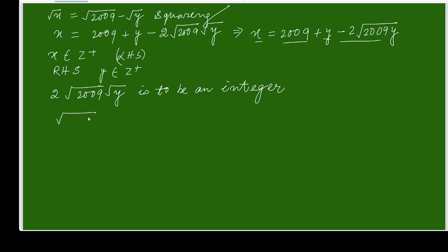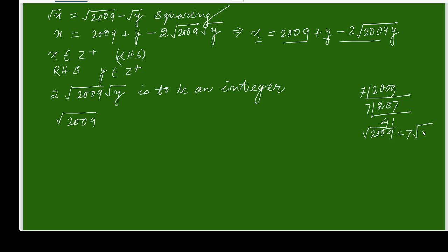Now let's factorize 2009. This is not an even number, not divisible by 2, 3, or 5. Going for 7: 7 divides 2009 giving 287, then 7 again giving 41. So 2009 equals 7 squared times 41. Therefore square root of 2009 equals 7 times square root of 41.